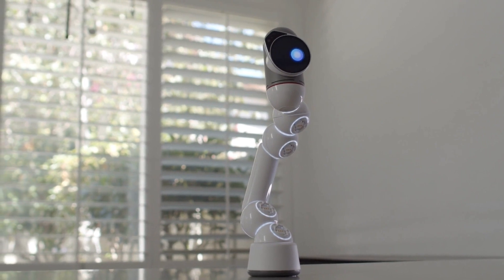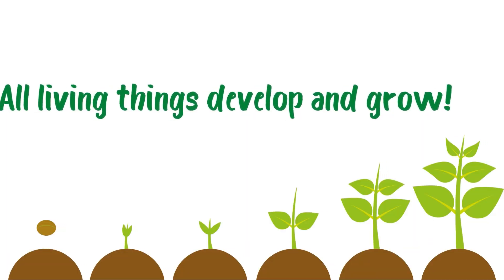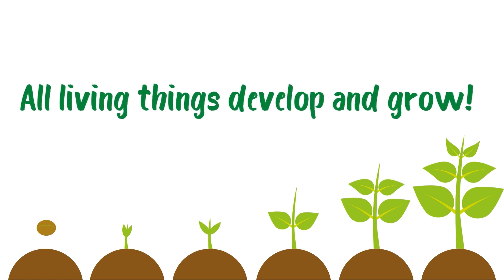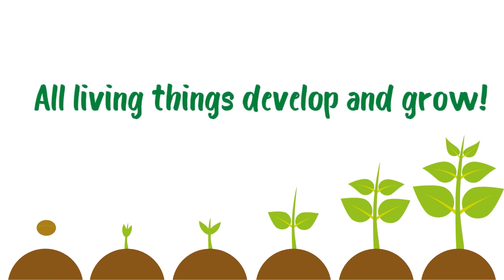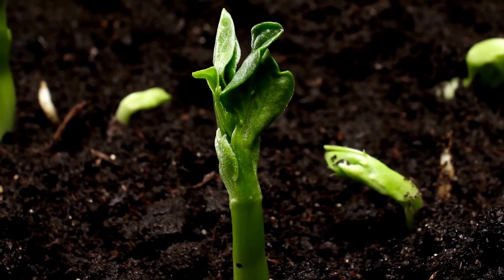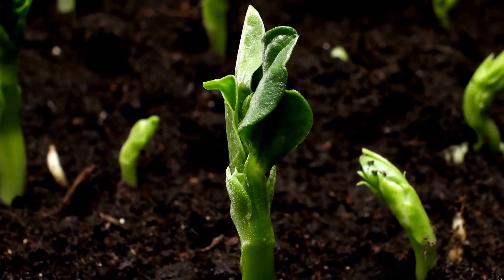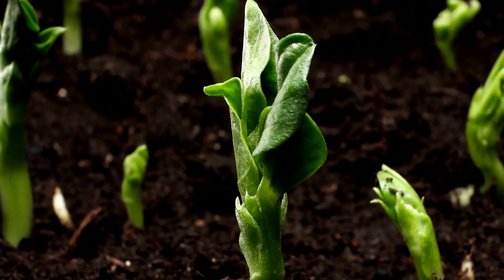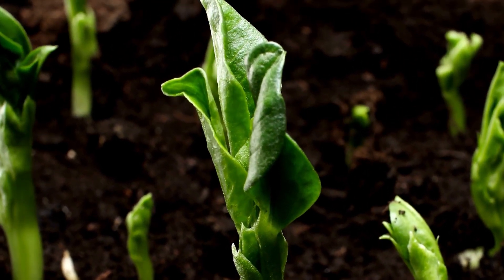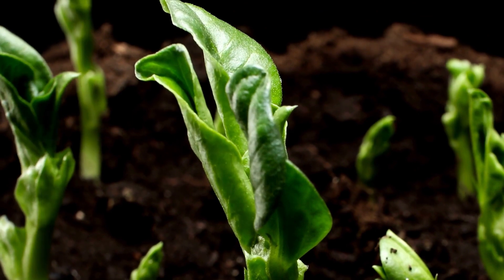The next thing we want to think about when figuring out if something is living or non-living is: all living things develop and grow. Just like this plant — it develops from a tiny baby plant into a mature plant. Plants really are living things.